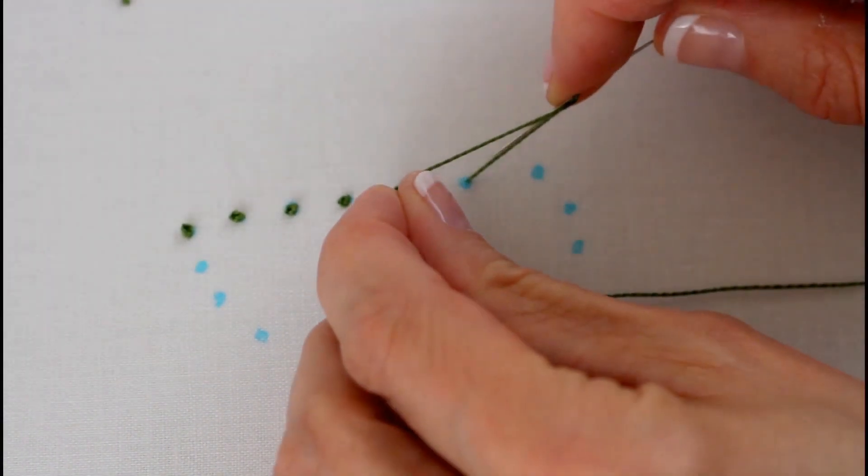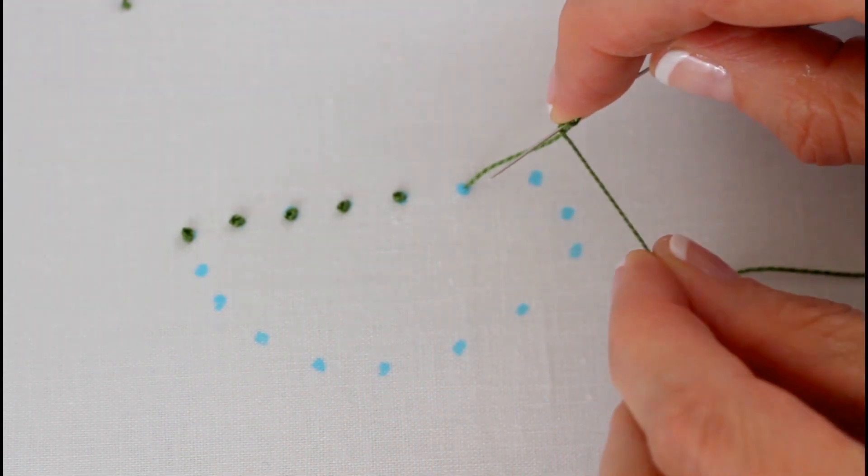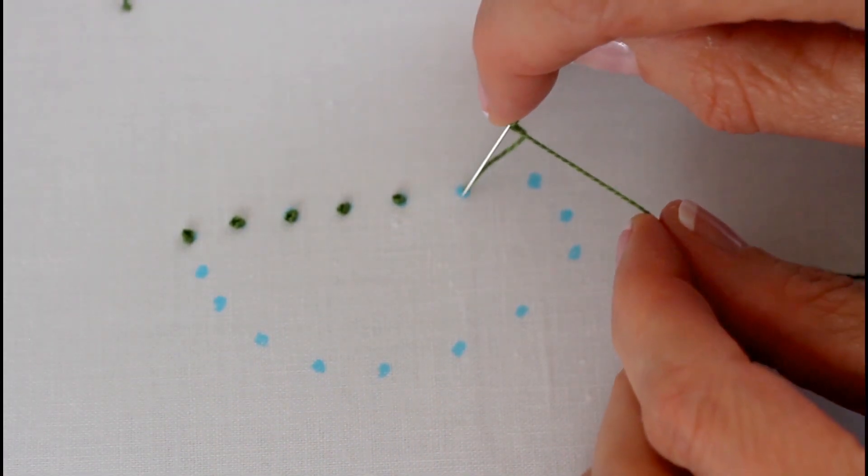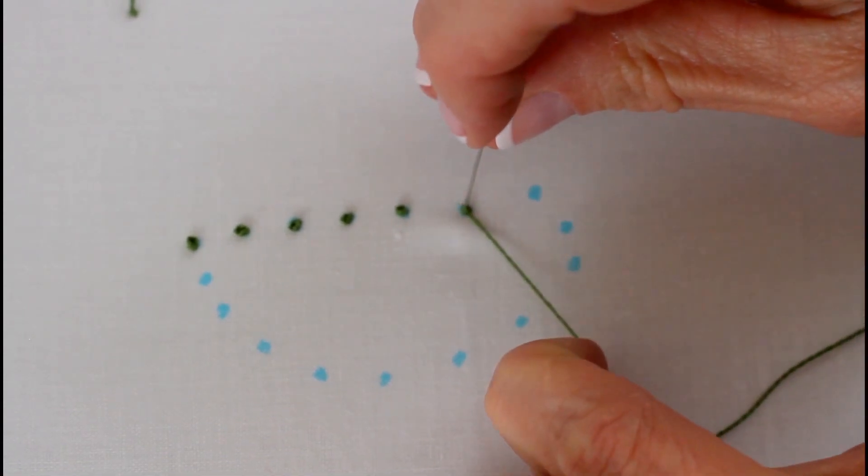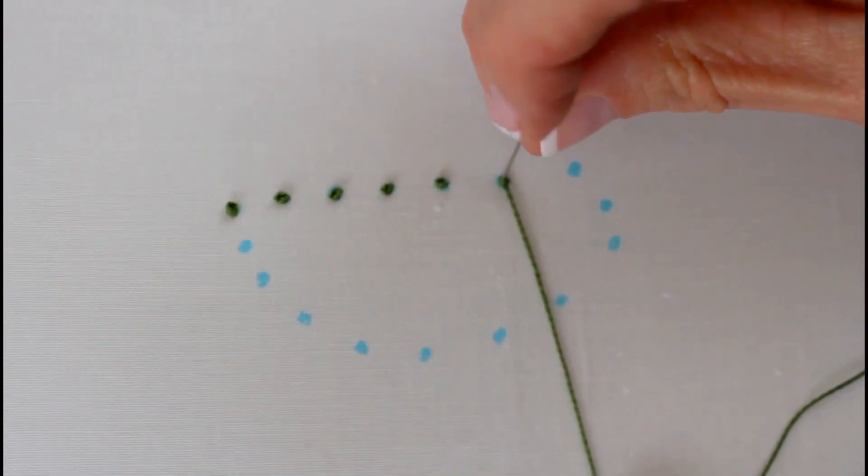Hold on to the thread, take your thread, go around to the right, around the needle, put your needle in where your dot is, and pull it tight down to the bottom and then carefully pull.